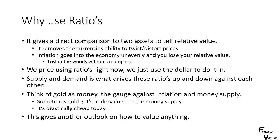What ratios do is remove the currency's ability to twist and distort prices. For example, if natural gas goes up 10% in dollar terms, you'd think you made money — but if everything else went up 30%, you lost purchasing power. That asset could be extremely cheap compared to everything else. Inflation goes into the economy unevenly, and you lose relative value when you price things in dollars. Without ratios, you're lost in the woods without a compass.